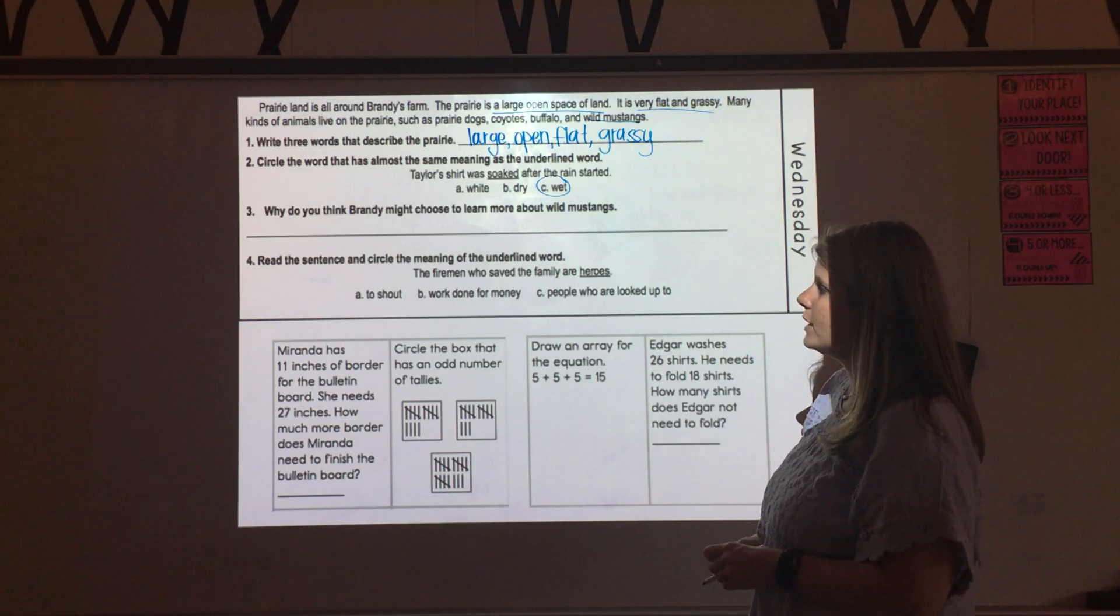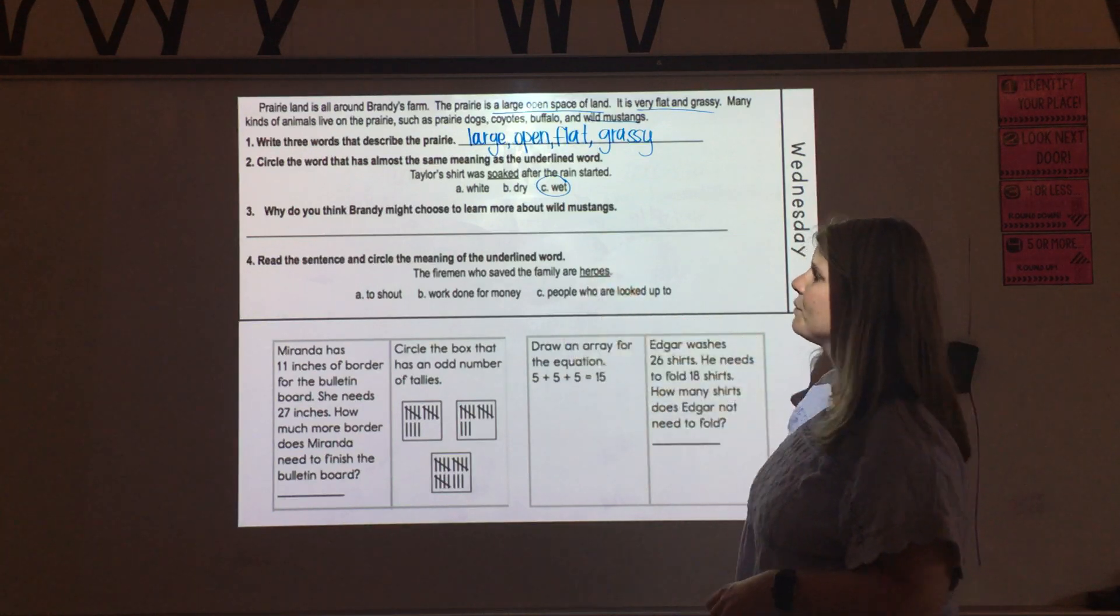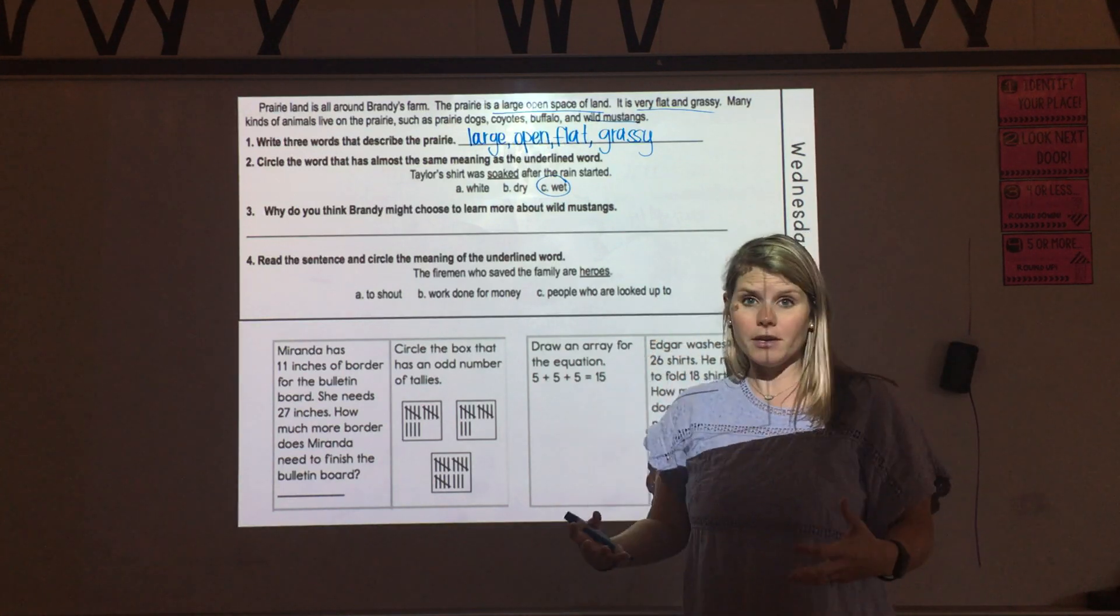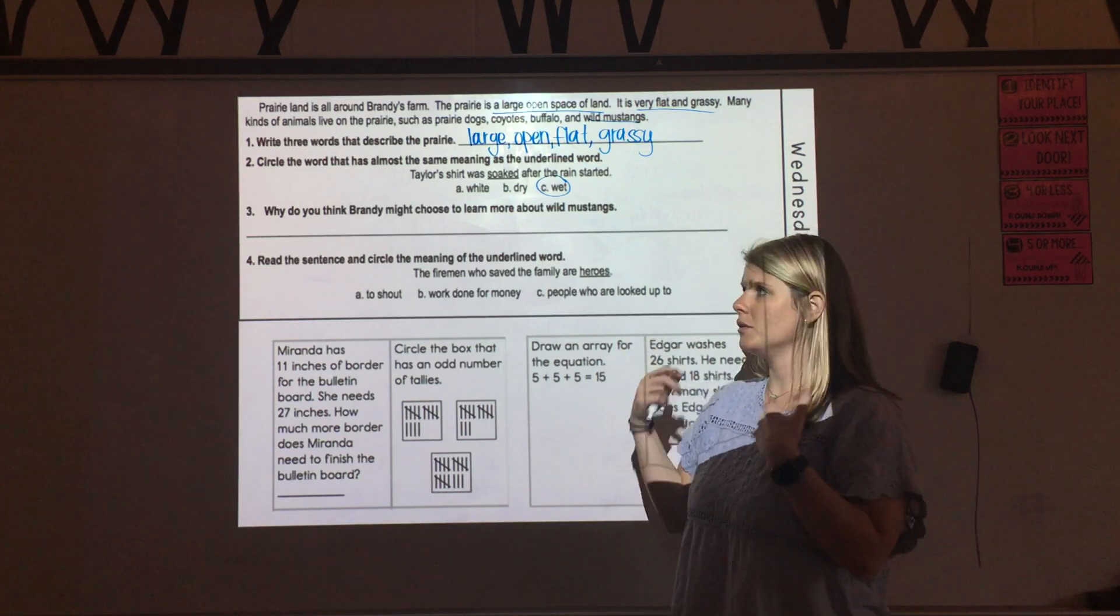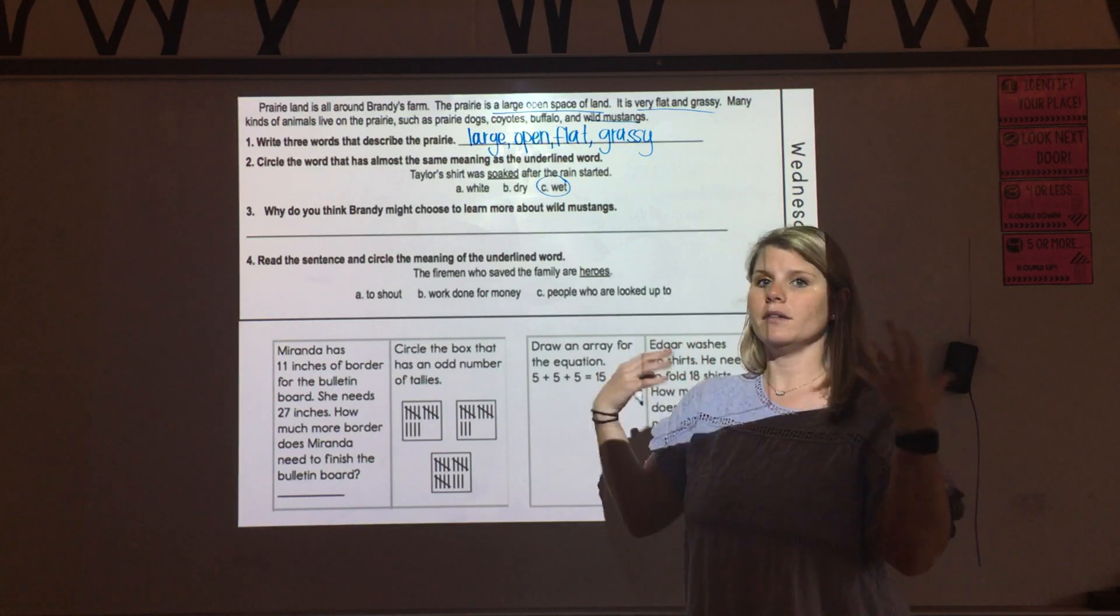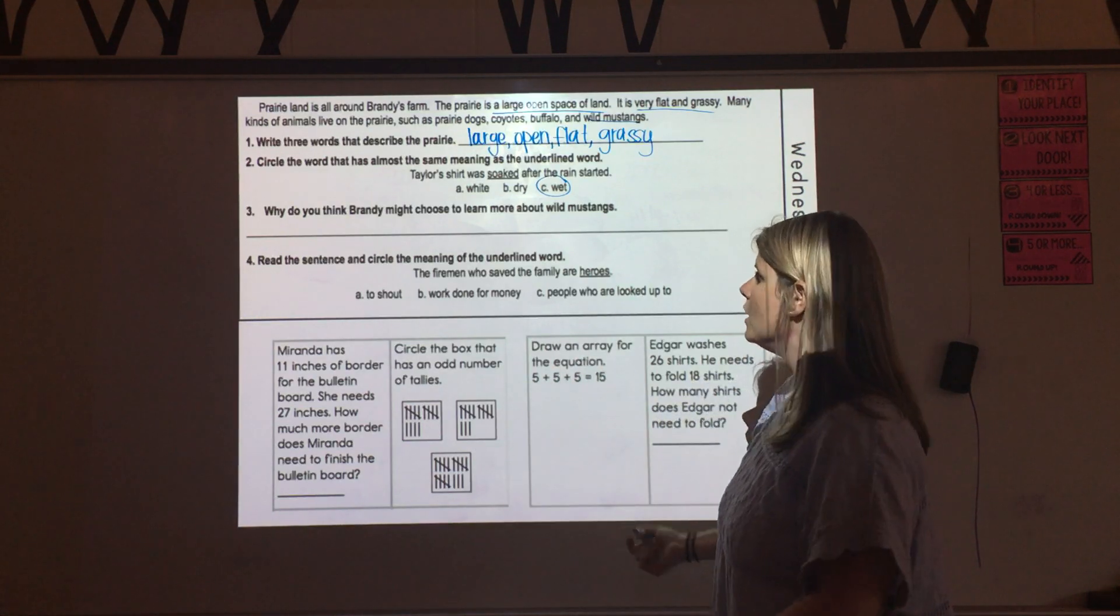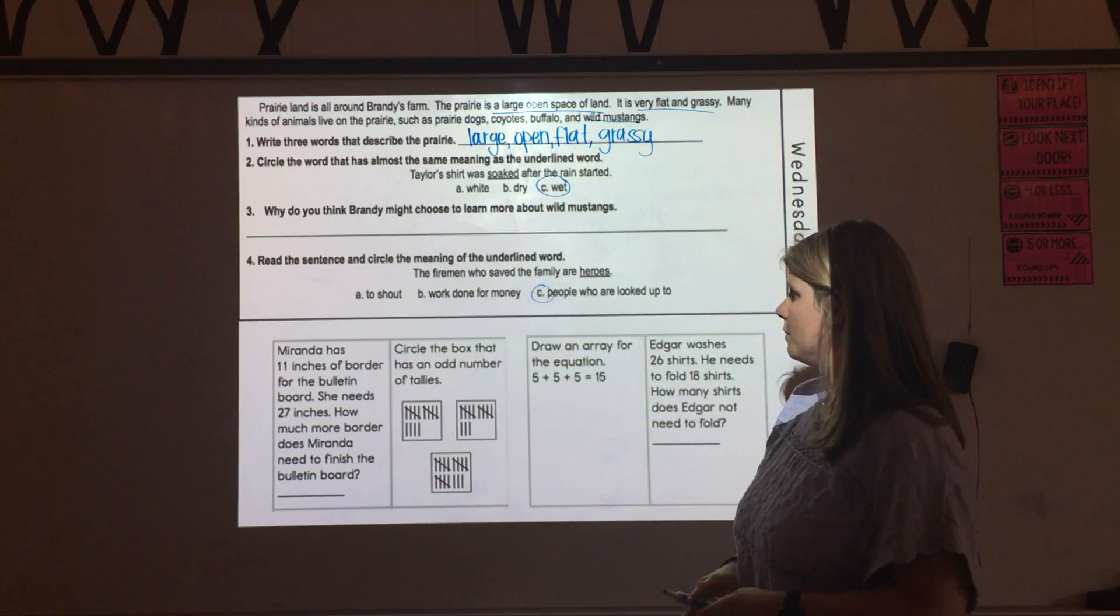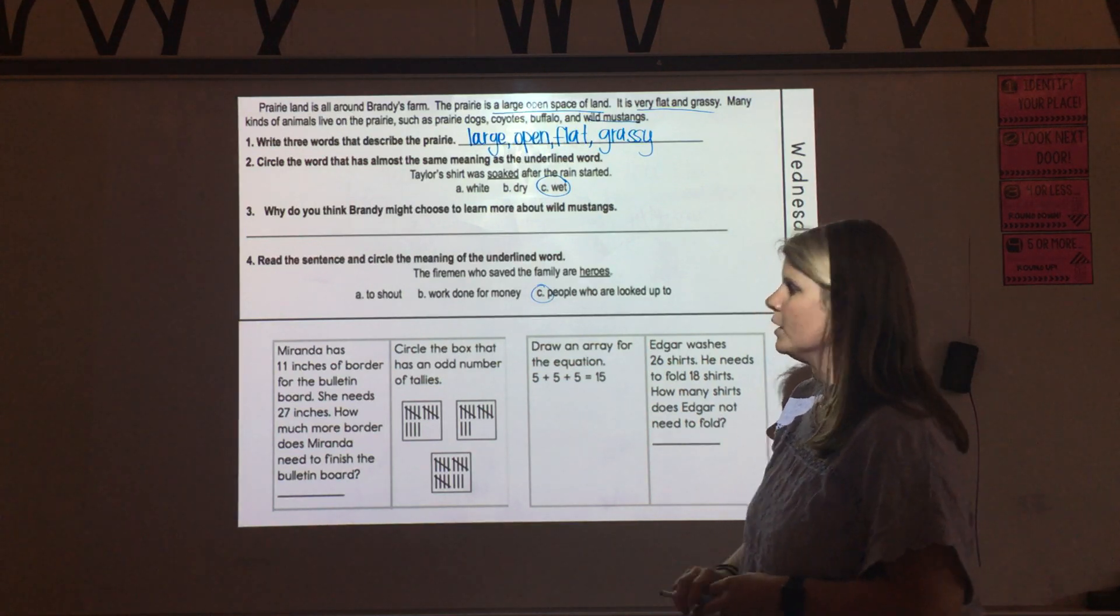And then number four is asking to read the sentence and figure out what those underlined words heroes mean. The firemen who saved the family are heroes. So when we think about heroes, superheroes come to my mind, military heroes, medical heroes, people that are admired and looked up to. Someone who you think is your hero would mean C, people who are looked up to. The other A and B choices to shout and work done for money don't really make sense here.